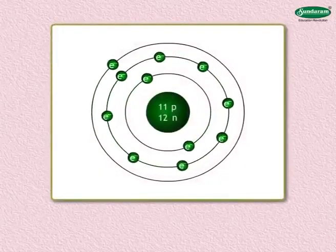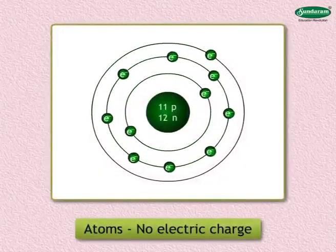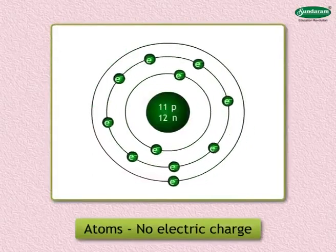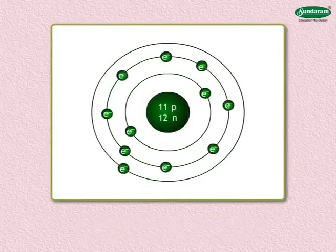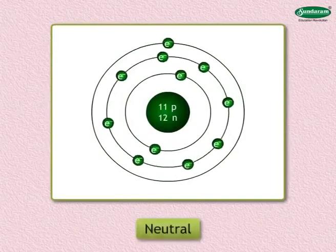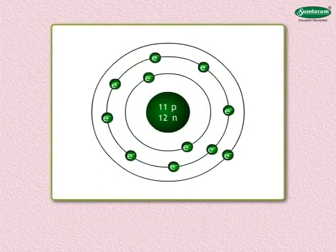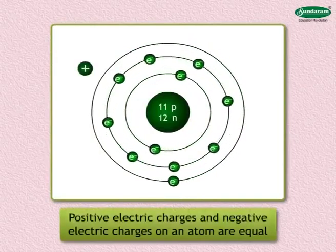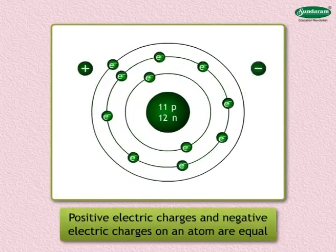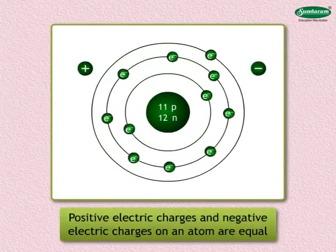Every substance is made up of atoms. An atom has no electric charge, so an atom of a substance is ordinarily neutral. This is because the number of positive electric charges and negative electric charges on an atom are equal.